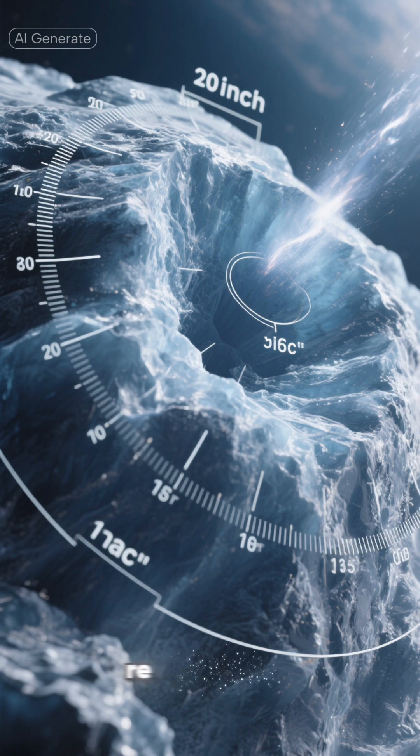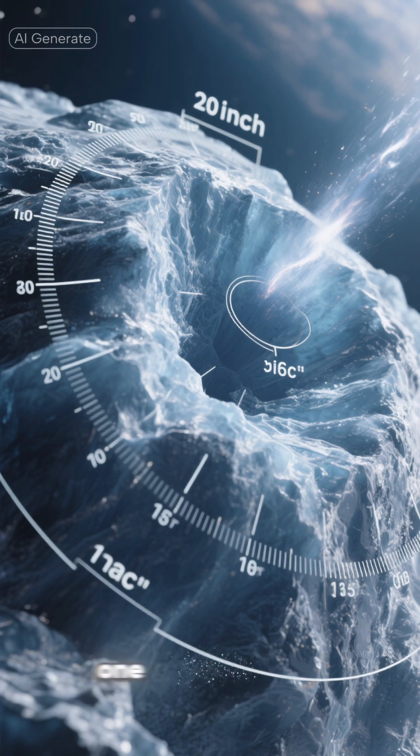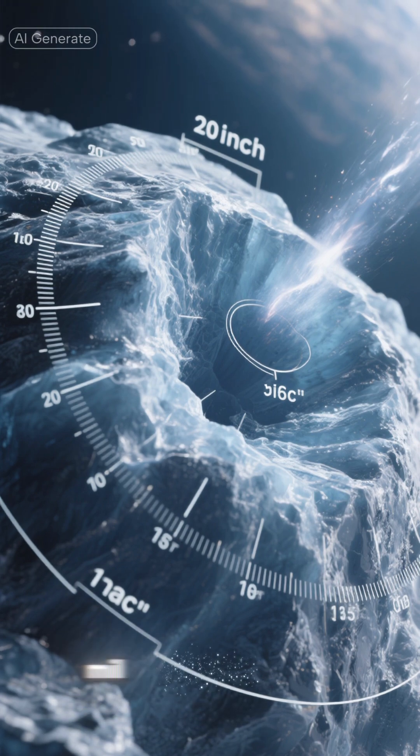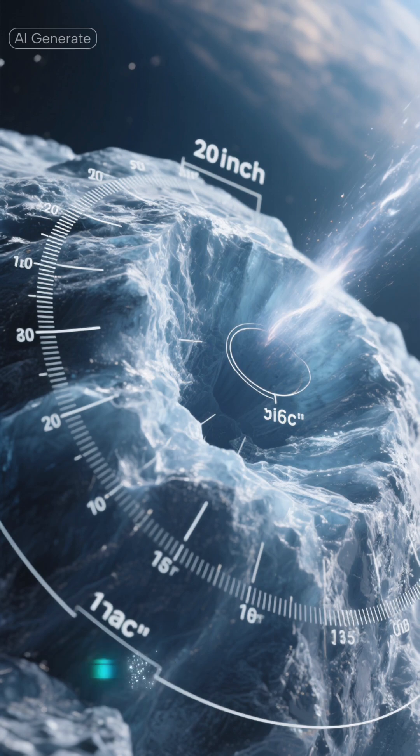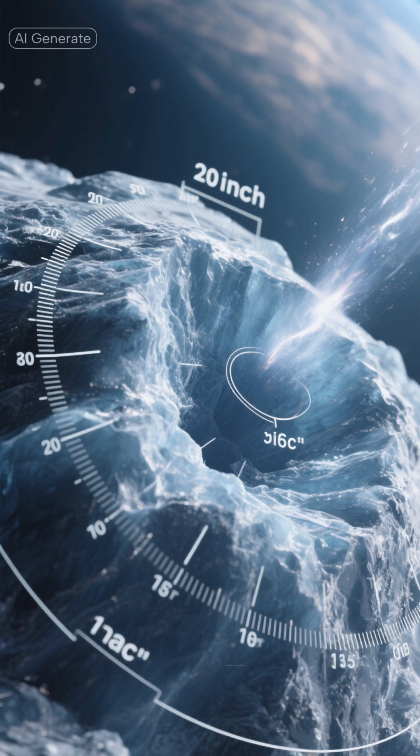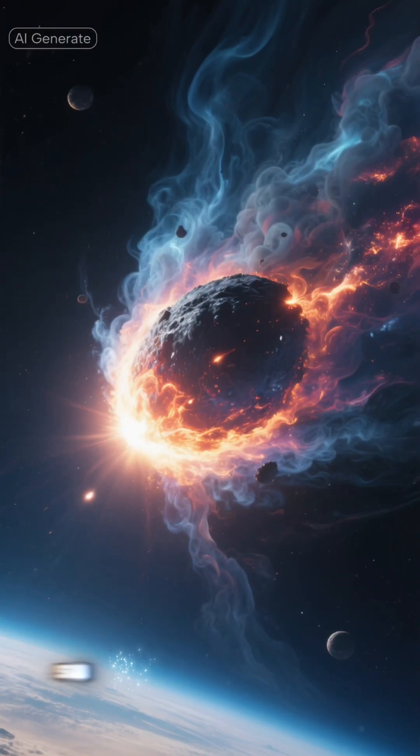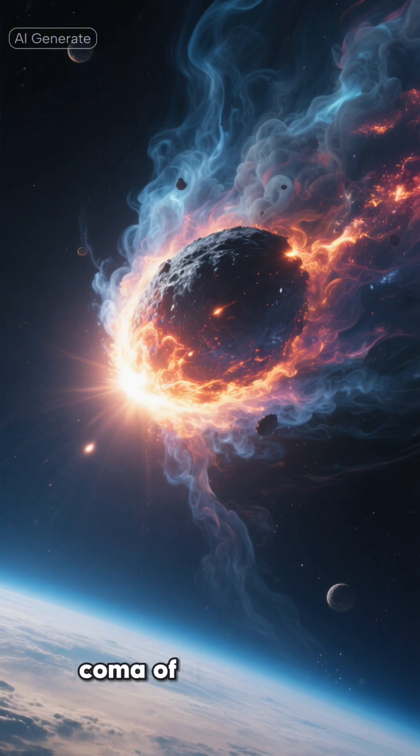Hubble imagery reveals its icy nucleus is between 1,000 feet and 3.5 miles across, making it the largest interstellar object observed to date. Scientists have confirmed it's a comet, surrounded by a glowing coma of gas and dust.